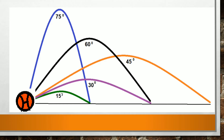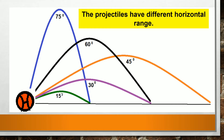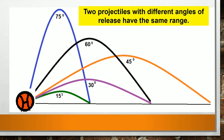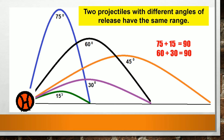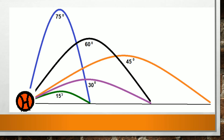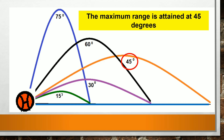The projectiles also have different horizontal ranges. It is a remarkable thing to note that two different launch angles can have the same range. For example, projectiles with the same initial velocity launched at 75 degrees and 15 degrees have the same range, as well as projectiles launched at 60 and 30 degrees. Notice that the angles in each pair add up to 90 degrees — both 75 and 15 degrees, and 60 and 30 degrees, equal 90 degrees.